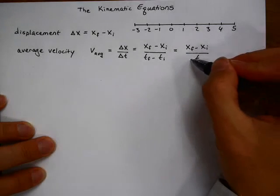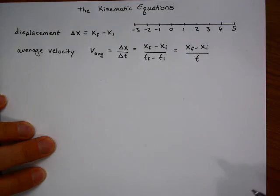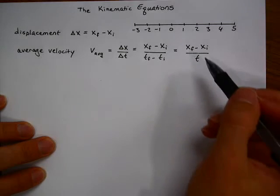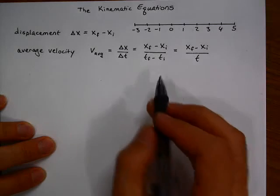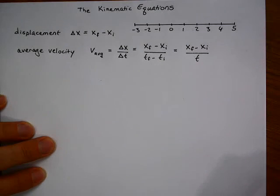Typically, we will only write a T in the denominator indicating a time period. Technically, we should put a delta in front of the T. This shortcut is what we will normally use because it is easy to keep track of what we are doing.